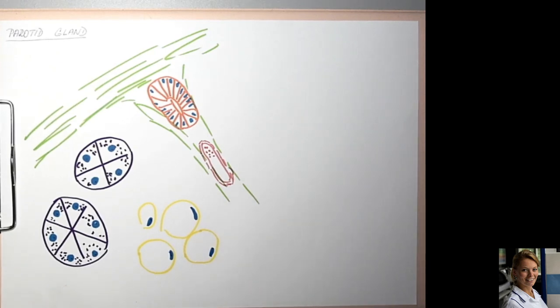The intercalated ducts which drain serous acini are lined by simple squamous epithelium. These cells are not well visible in the histological slide, so I will not draw them in the scheme.